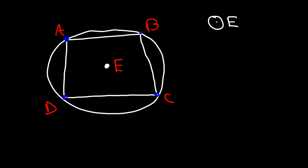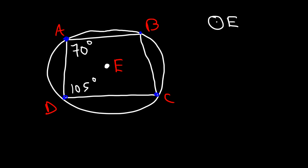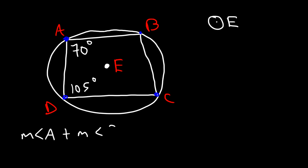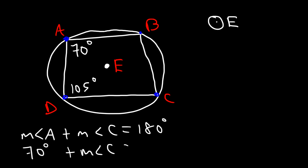Something you need to know about a quadrilateral inscribed in a circle: the opposite angles are supplementary. So if angle A is 70 degrees and angle D is 105 degrees, angle C is opposite to A, so those two are supplementary. Angle A plus angle C must add up to 180, so angle C is 180 minus 70, which is 110.